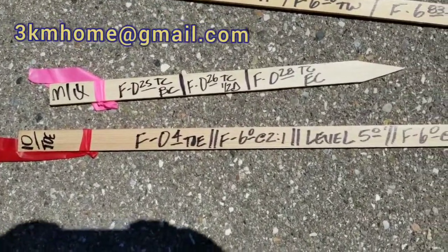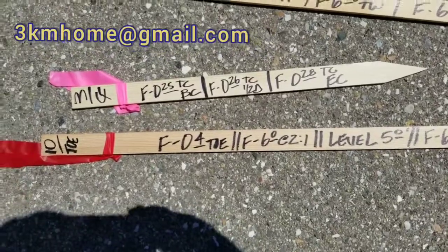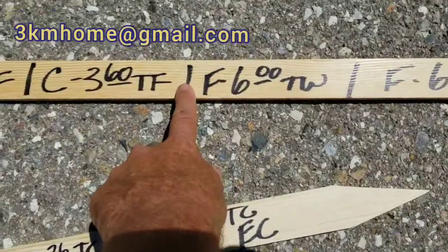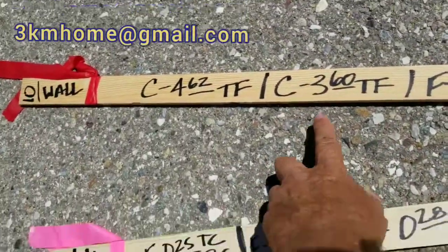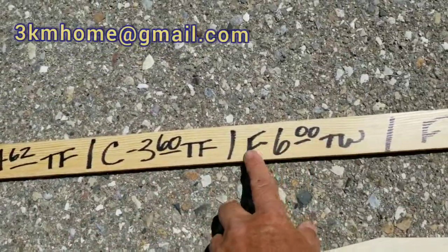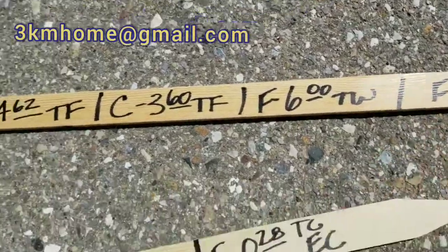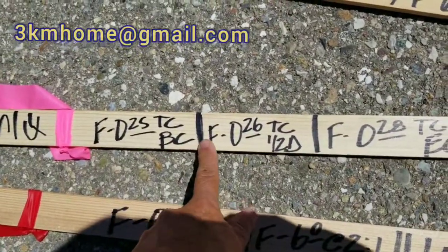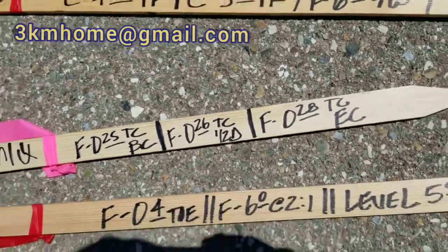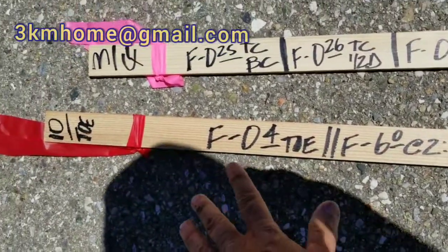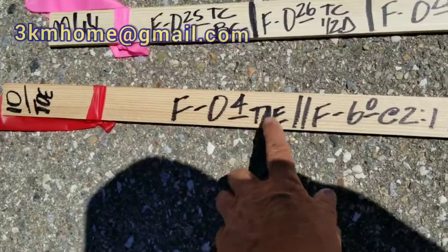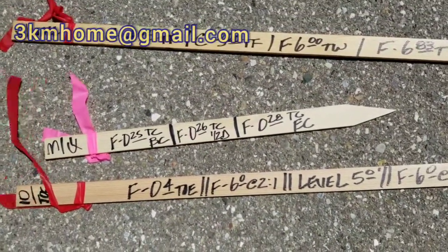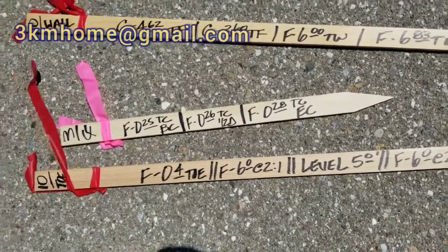Sometimes you'll come across survey stakes where there's one slash when it comes to the grades. This is an example of a wall stake, so you'll see one slash in between the cuts and fills. Got a curb stake where there's one slash between the fills. And then this is an example of a slope stake where there's two slashes. A lot of times we get asked, what do the slashes mean?